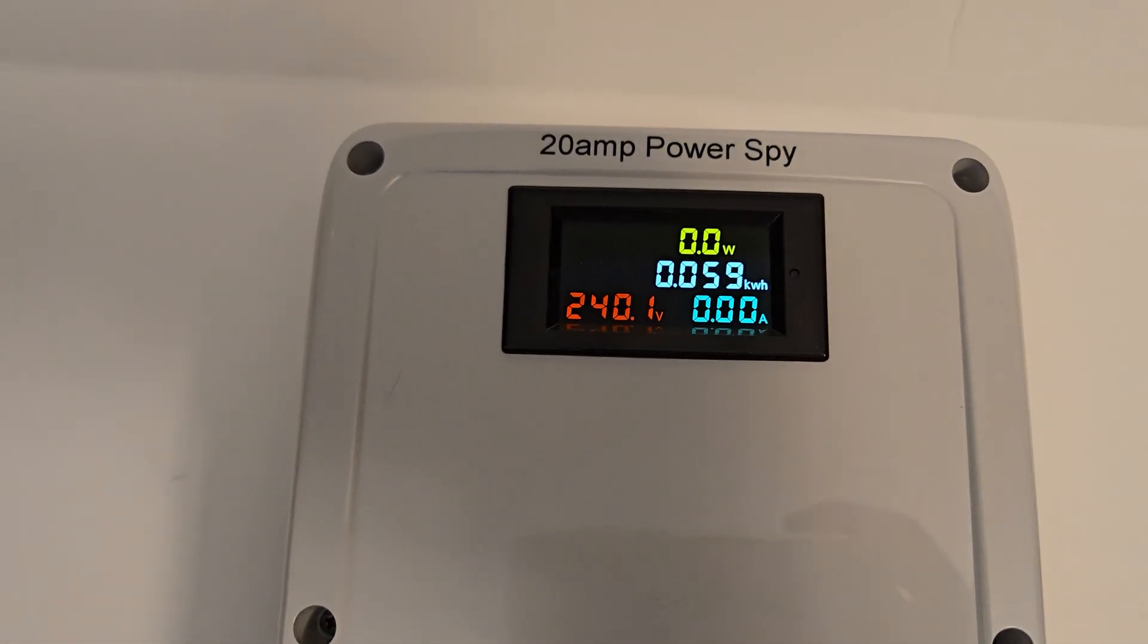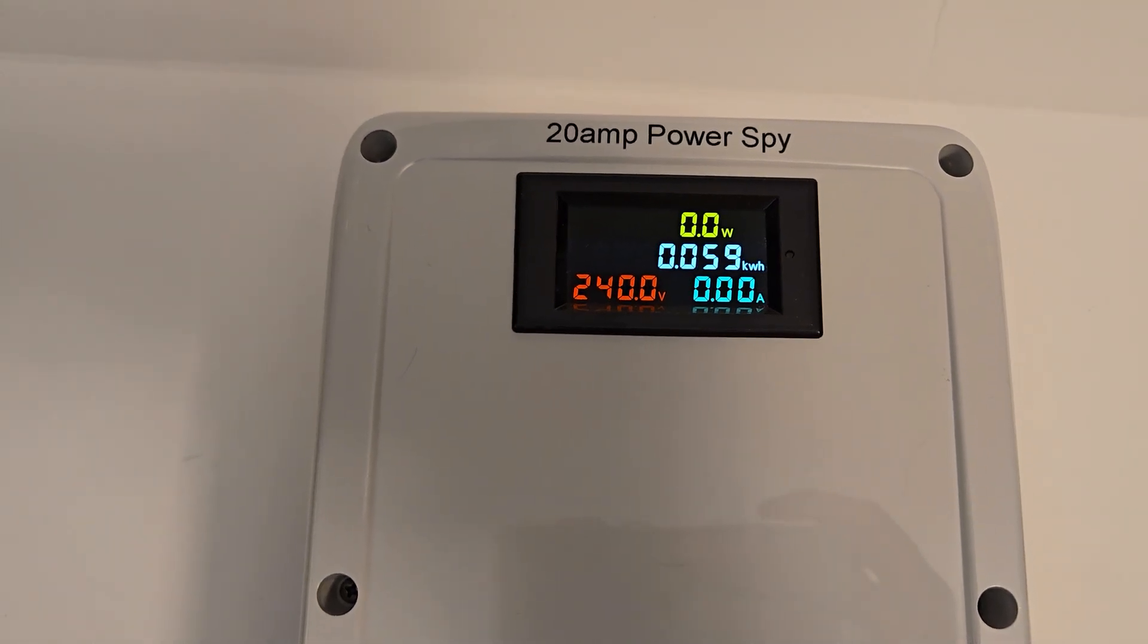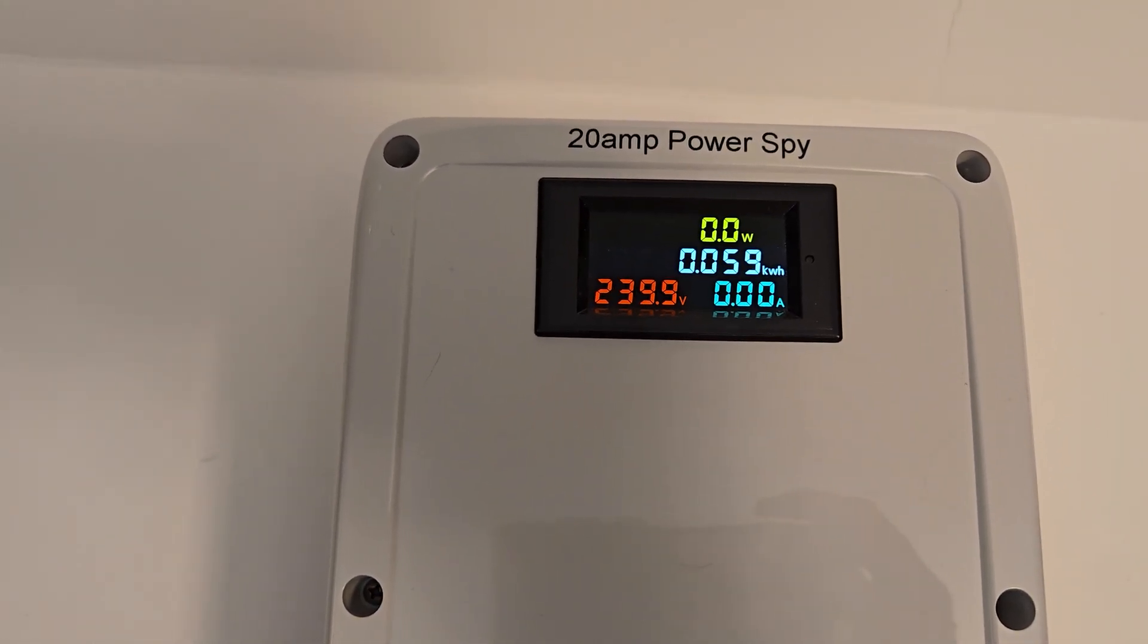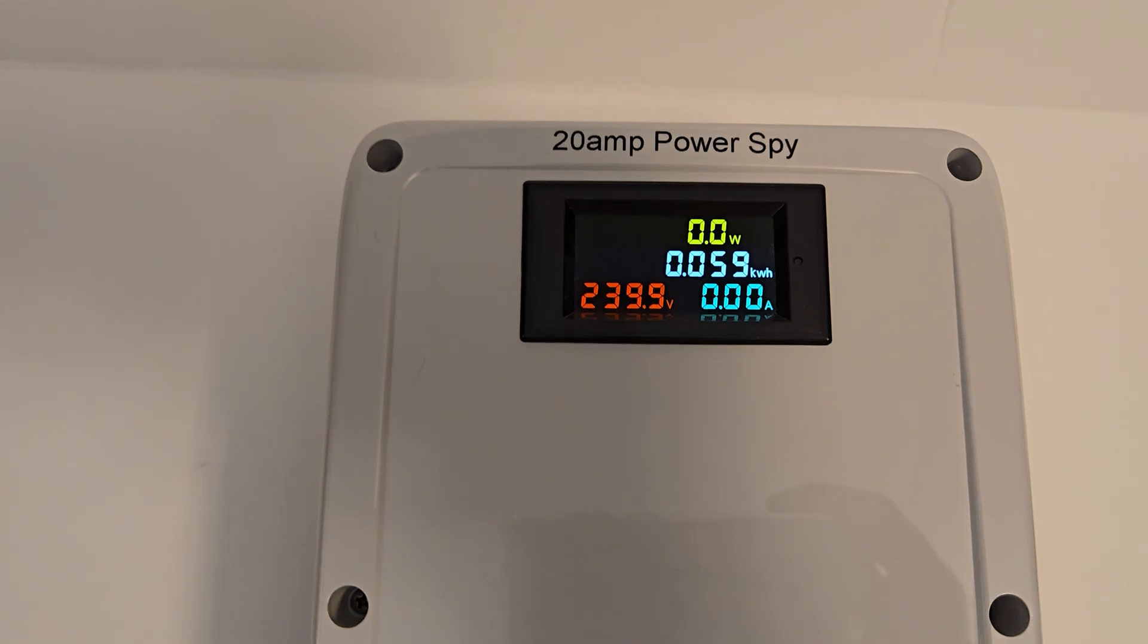So the meter, beautiful four-color display, tells you your line voltage. Right now we're at 240 volts approximately. It'll show you the amperage being drawn.